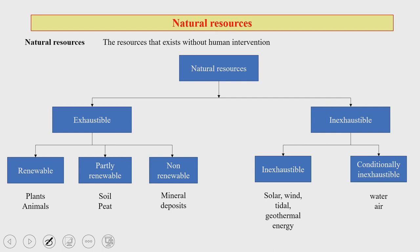Natural resources can largely be of two major types: exhaustible and inexhaustible. Exhaustible resources can be divided into renewable, partly renewable, and non-renewable. Renewable examples are plants and animals. Partly renewable resources — like soil and peat — can be renewed through some effort or technology even if they are lost. Non-renewable resources such as mineral deposits cannot be renewed through any technology once exhausted.